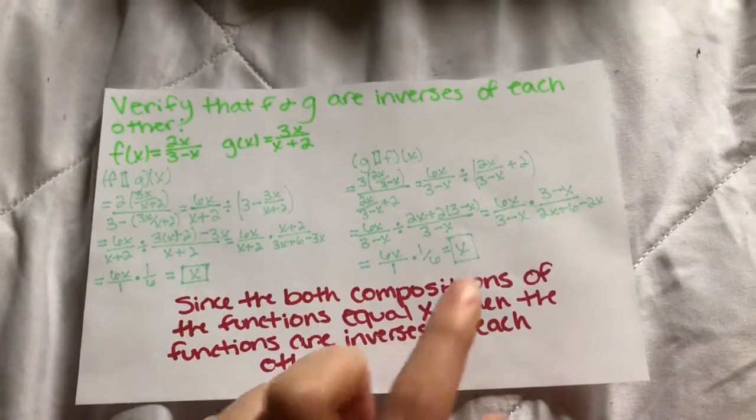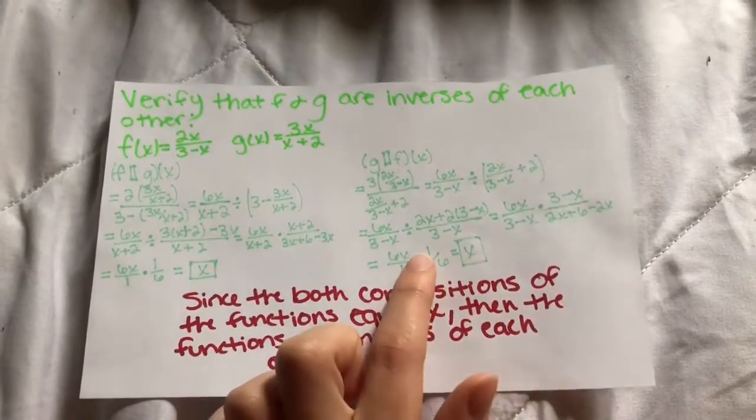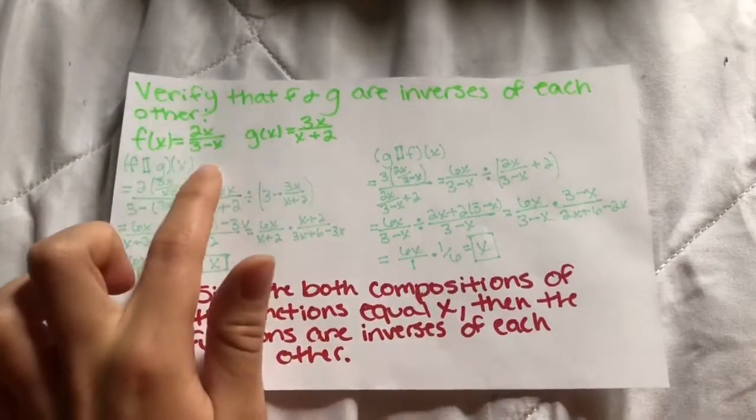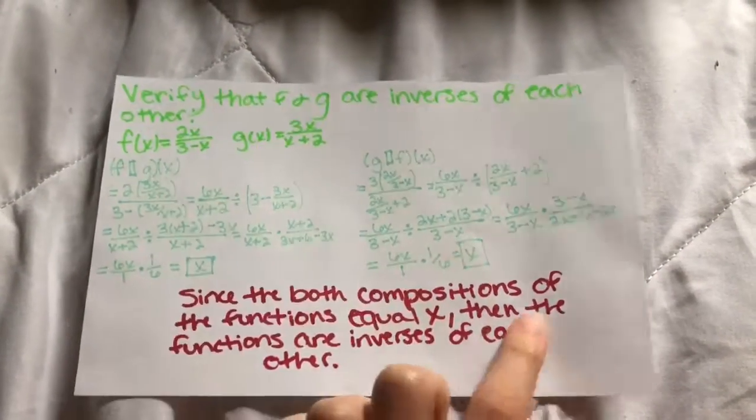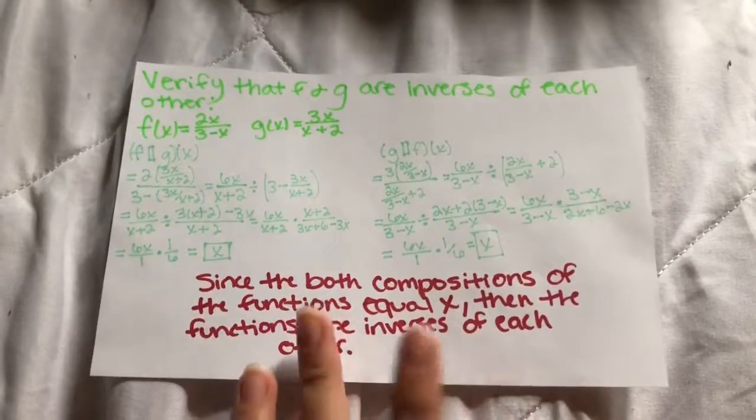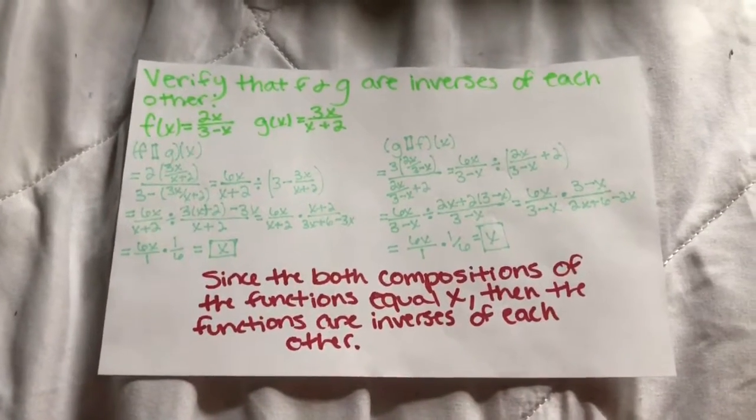And then to figure out if they're actually inverse, you just do the same thing for this one. And you take g(x) and plug in this equation for all of the x's in the problem. And you're going to end up with x. And since they both ended up the same, they are inverses of each other.